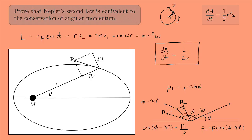That's the big result. If Kepler's second law is true, then dA/dt is constant, which means L over 2M is constant. Since M doesn't change, L must also be constant. And it works the other way around too: if L is constant, then dA/dt is constant. This proves that Kepler's second law is equivalent to the conservation of angular momentum.